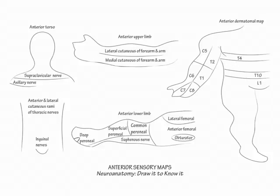To show the sensory coverage of the lower extremity, divide it into four compartments from superior lateral to inferior medial using three sloping lines. Label them L2, L3, L4, and L5 respectively. Then label the lateral ankle as S1.